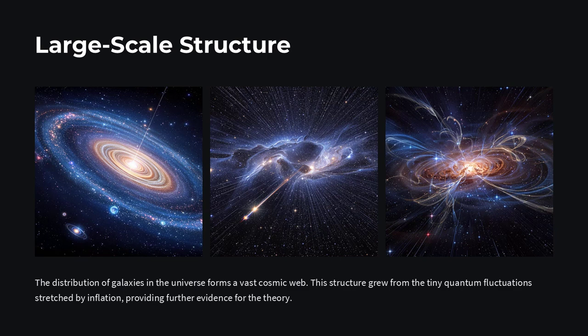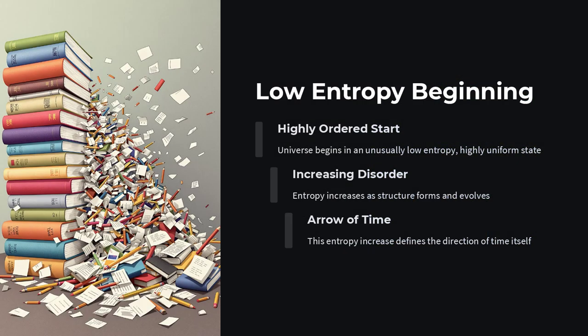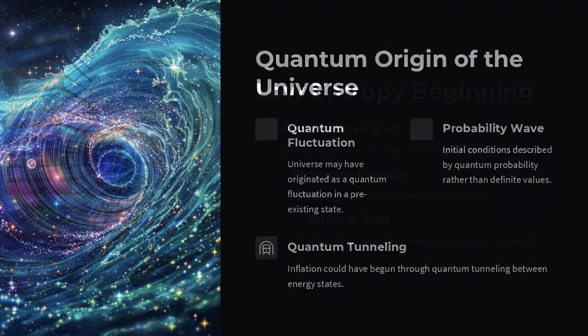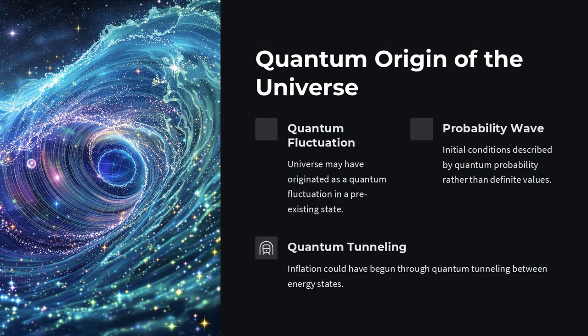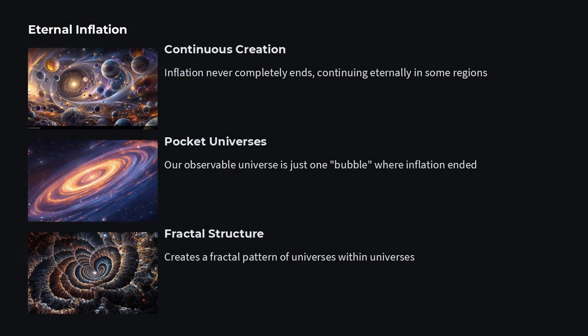But wait, isn't inflation a bit magical? It feels that way, but inflation also explains why the CMB isn't perfectly smooth. Tiny quantum jitters in that pre-inflation patch were stretched out along with space. These microscopic fluctuations became slight density variations, over densities here, under densities there, that later grew under gravity into galaxies, clusters, and the vast cosmic web. Without inflation, we'd have no graceful way to get from a nearly featureless fireball to the rich structure we observe in the night sky.